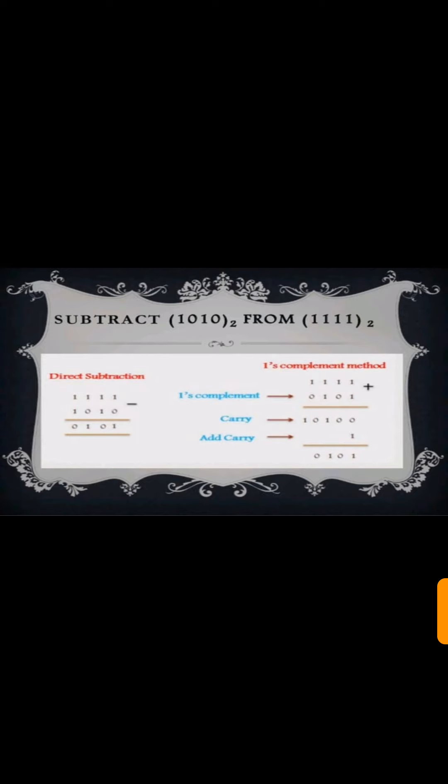Then we have to do addition of 1 to get the result. So the final result after adding 1 is 0, 1, 0, 1. 0 and 1 as it is comes to 0101. So this will be the final answer for subtraction of 1010 from four ones.